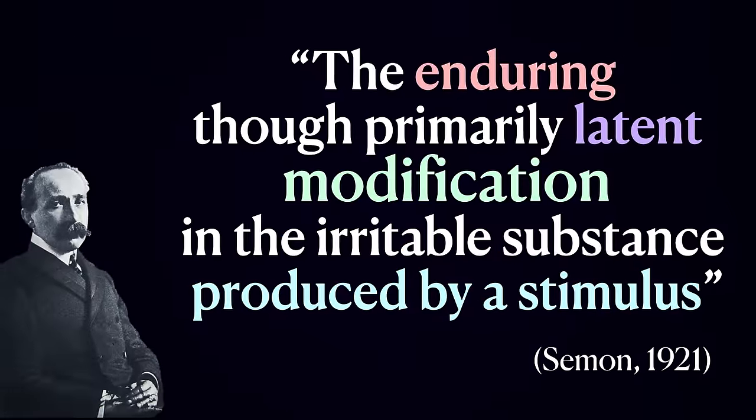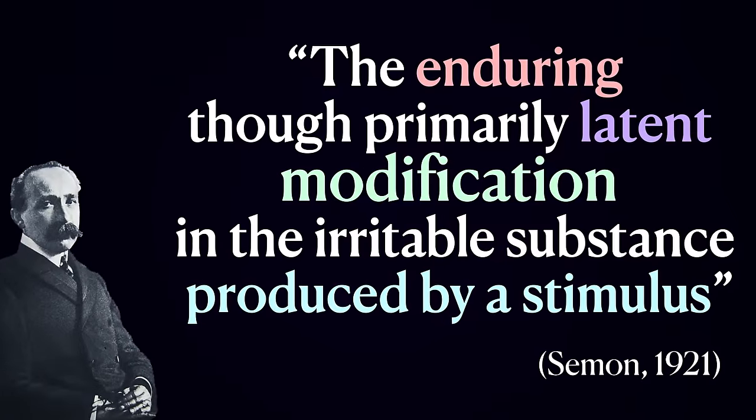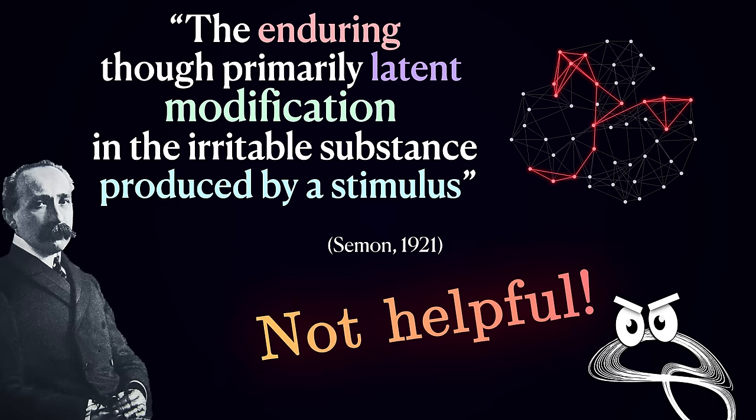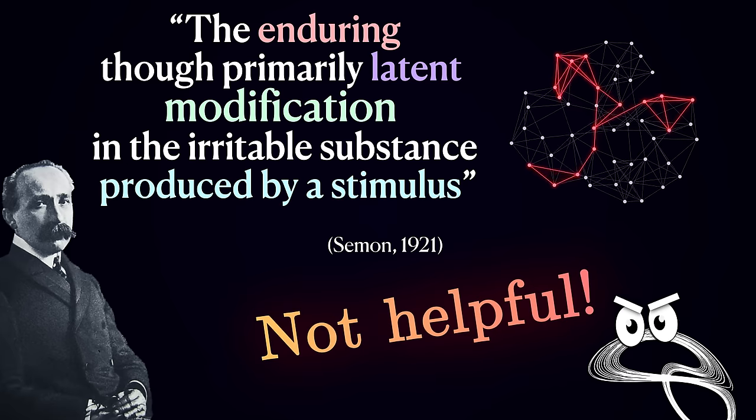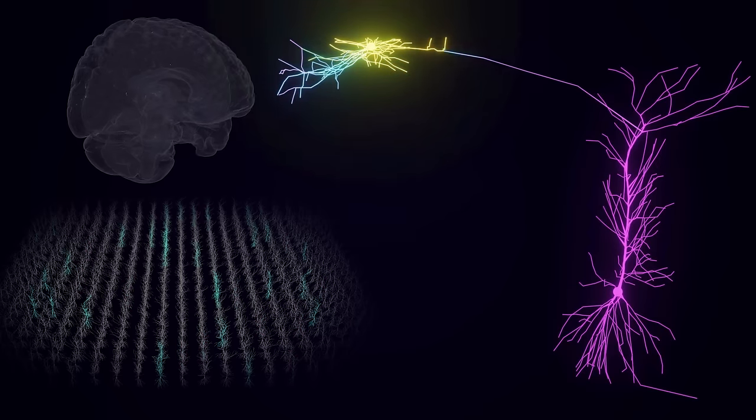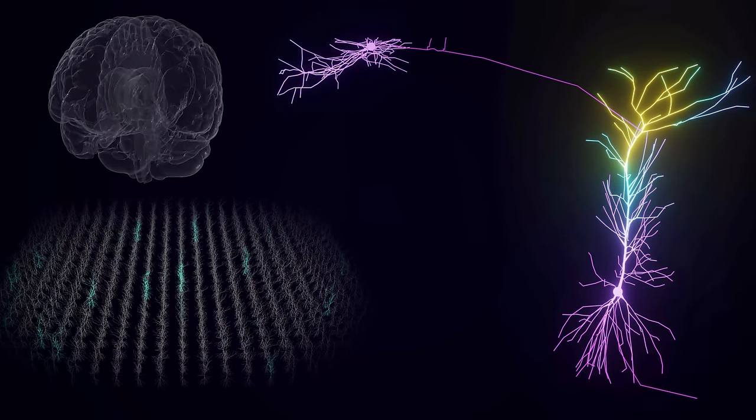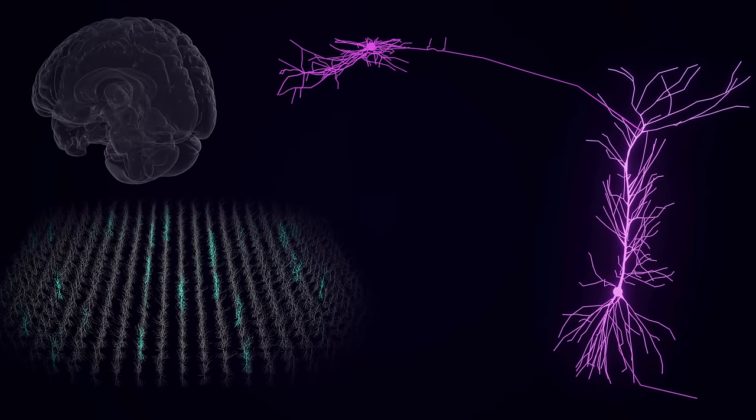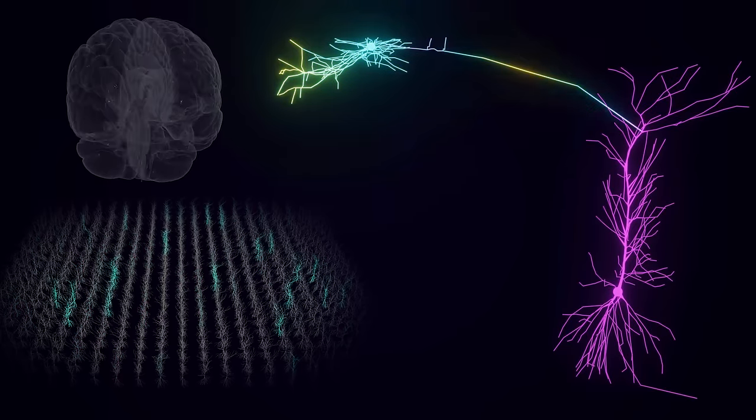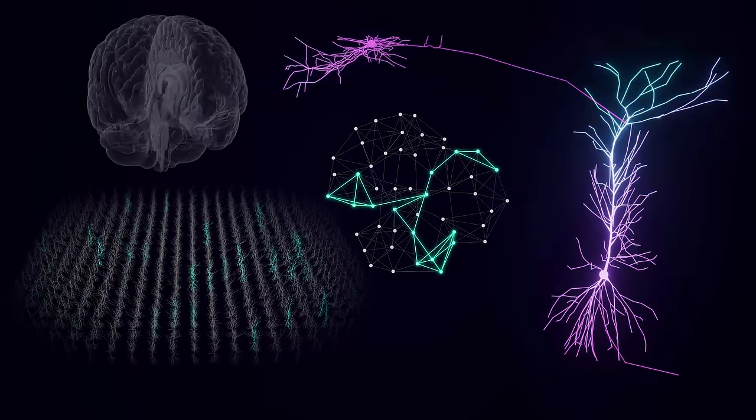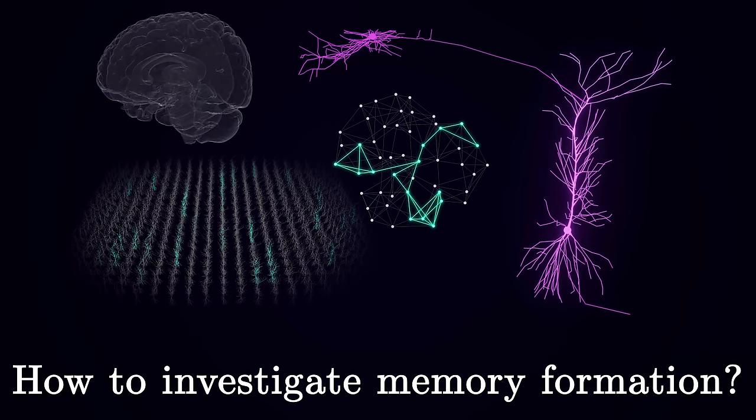But notice that the original phrasing in Semon's definition is very vague. It doesn't really tell us anything about the biological nature of these lasting changes. As decades passed, it became known that the brain consists of nerve cells that generate pulses of electricity encoding incoming stimuli. So memories must be stored as changes in patterns of how neurons talk to each other. But before we dive deeper into what these changes are, let's discuss how we can study memory formation in the first place.